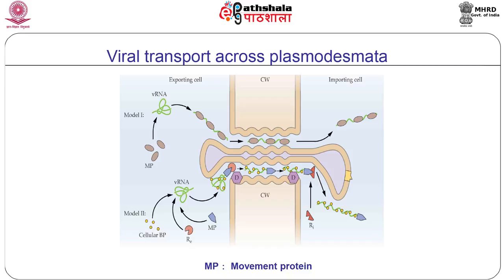Viral-encoded movement proteins (MPs) facilitate these steps. Most MPs are multifunctional. First, MPs are required for movement. Second, MPs bind to the virus genome. Third, MPs interact with the plant cytoskeleton. Fourth, MPs localize to plasmodesmata. Fifth, MPs gate plasmodesmata.